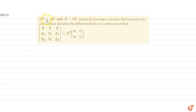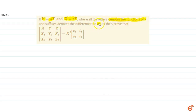In this question, we are given y equals s of x and z equals t of x, where all letters denote functions of x and suffixes denote differentiation with respect to x. We have to prove that this determinant equals x cubed into s₁ s₂ t₁ t₂.